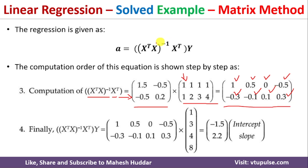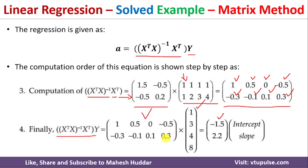We now multiply this matrix by Y = [1, 3, 4, 8]^T. The first row gives: 1×1 + 0.5×3 + 0×4 − 0.5×8 = 1 + 1.5 + 0 − 4 = −1.5. The second row gives: −0.3×1 − 0.1×3 + 0.1×4 + 0.3×8 = −0.3 − 0.3 + 0.4 + 2.4 = 2.2. So the coefficient matrix A = [−1.5, 2.2].